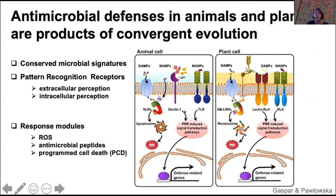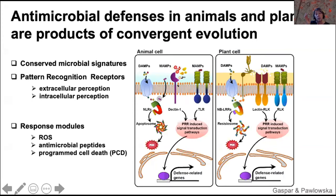Both animals and plants have signal transduction modules and response modules consisting of reactive oxygen species production, production of antimicrobial peptides, and programmed cell death. But those specific components are completely different because they evolved convergently.